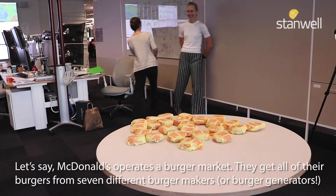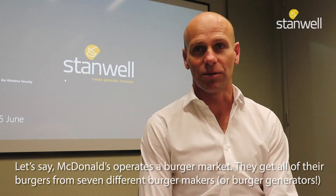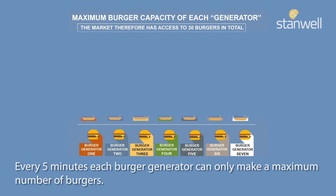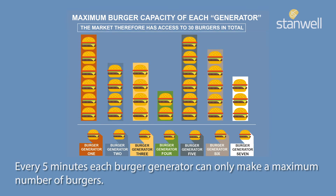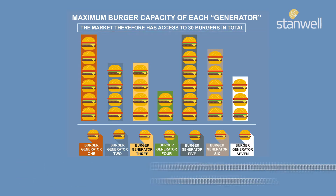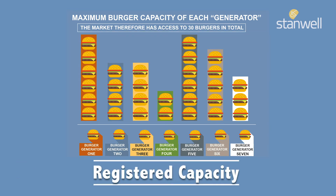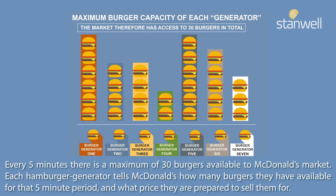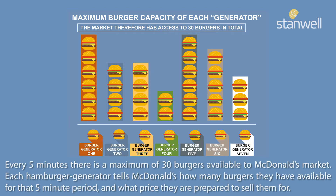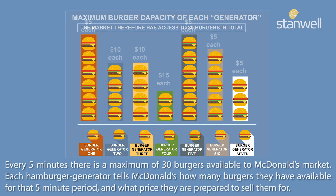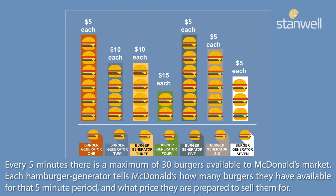They get all their burgers from seven registered burger makers, or burger generators. Every five minutes, each burger generator can only make a maximum number of burgers — that's called their registered capacity. Every five minutes, there is a maximum of 30 burgers available to the McDonald's market. Each hamburger generator tells McDonald's how many burgers they have available for that five-minute period and what price they are prepared to sell them for.